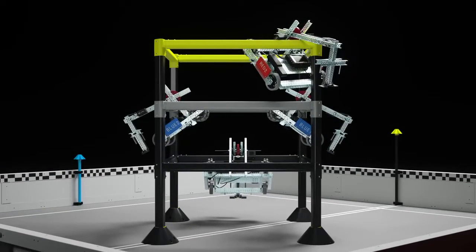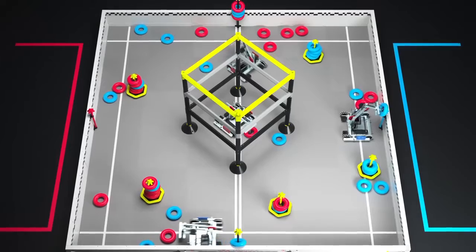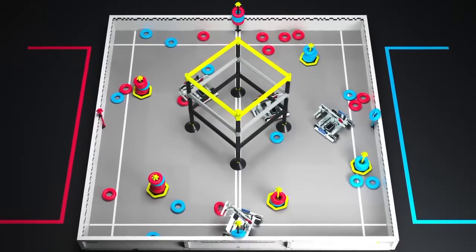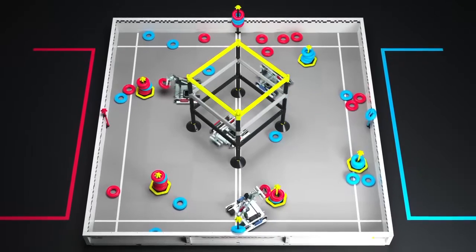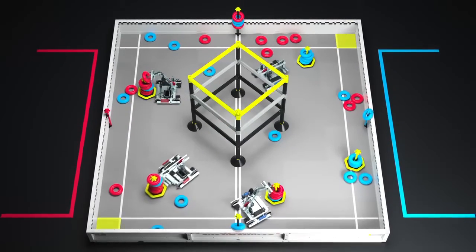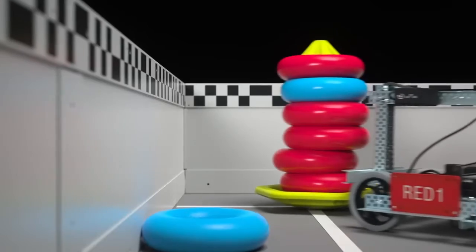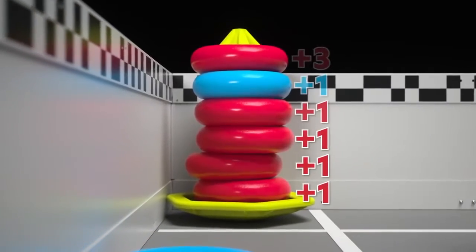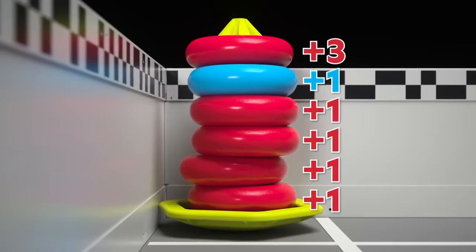One more thing. At any point during the match, mobile goals can be placed into the four corners of the field, which will modify the scores of both alliances. Two of them are positive corners. If a mobile goal is placed in a positive corner, all rings scored on that mobile goal will have their point values doubled.